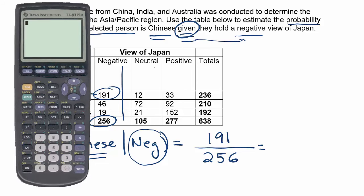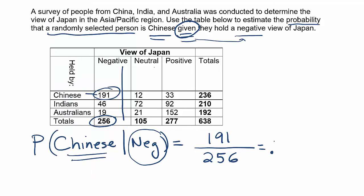Let's see what that works out to be: 191 divided by 256. The answer works out to be 0.746 to three decimal places. So it's basically a 74.6% probability that if someone holds a negative view of Japan, they're Chinese.